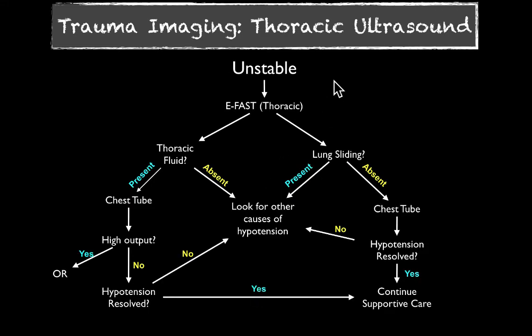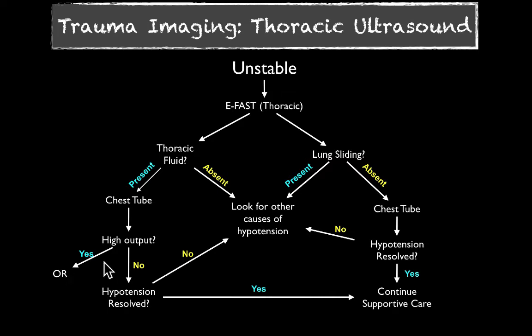When looking at the thorax, we have two binary questions. First: is there thoracic free fluid? If there is no thoracic free fluid, look for other causes of hypotension. If it is present, you need to consider a chest tube. If that chest tube is high output — generally more than a liter out initially, or greater than 150 to 200 cc's per hour for several hours — they need to go to the OR. You'll want to check your institutional guidelines. If you resolve the hypotension, continue supportive care; if not, continue looking for other causes.